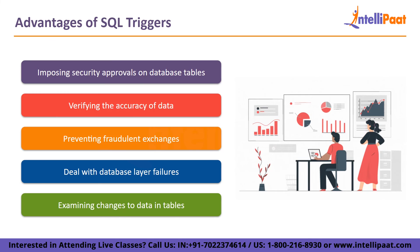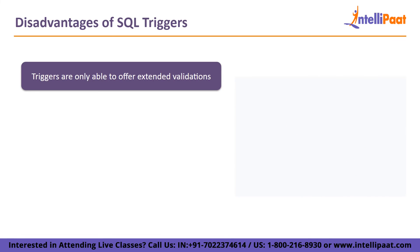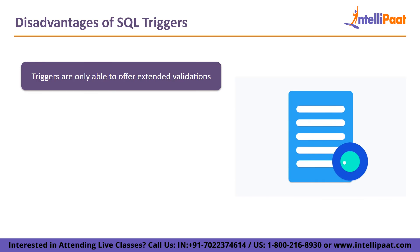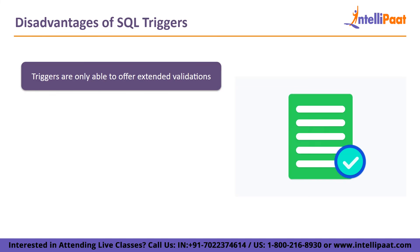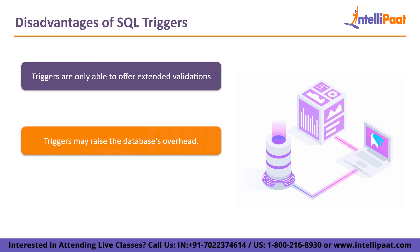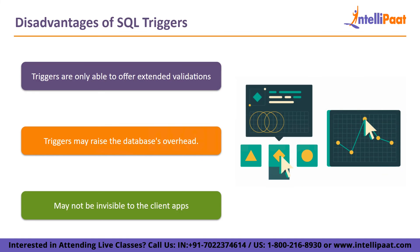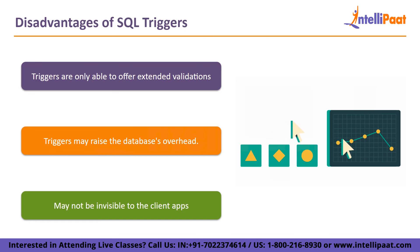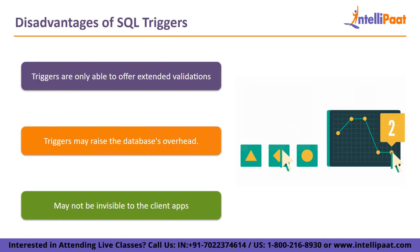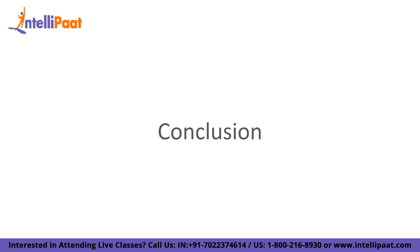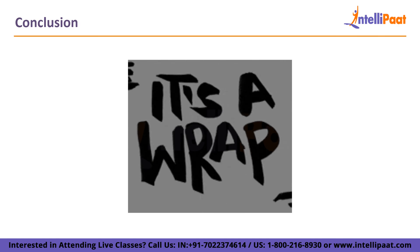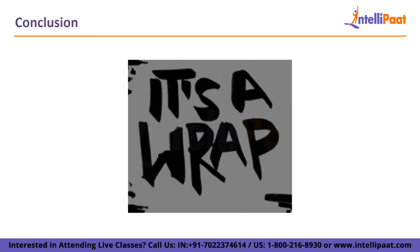Now let us take a look at the disadvantages. Triggers are only able to offer extended validations, not all kinds — use NOT NULL, UNIQUE, CHECK, and foreign key constraints for basic validation. Triggers may raise the database's overhead. Triggers execute automatically in the database, which may not be visible to client applications, making troubleshooting them challenging. One should be aware of how many rows the trigger will affect, as this could result in unanticipated overhead.